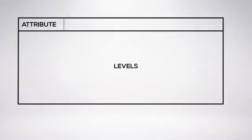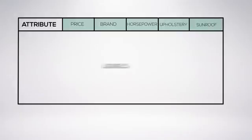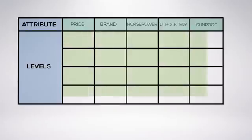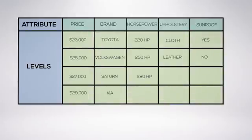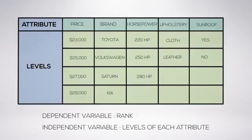Let me explain attributes and levels using an example of cars. If you look at the table on the slide, there are five attributes — price, brand, horsepower, upholstery, and sunroof — and a total of about 15 attribute levels. Real-world designs often contain many more attributes than those presented here. Conjoint analysis is essentially a regression technique that estimates how much an attribute is worth to a consumer, using the rank — the preference ordering of a customer — as the dependent variable and the levels of each attribute as the independent variable.